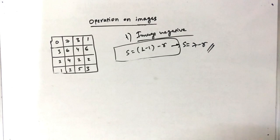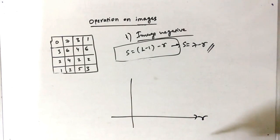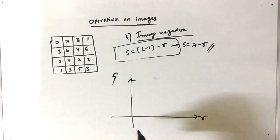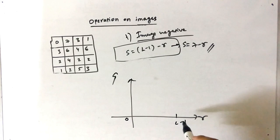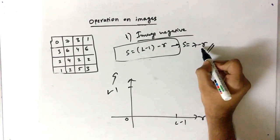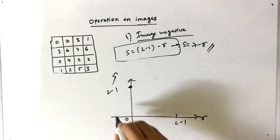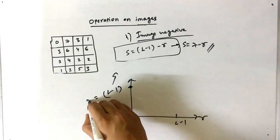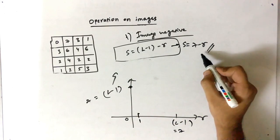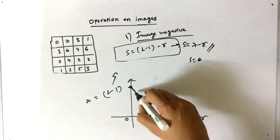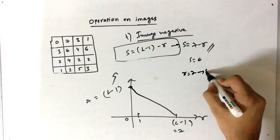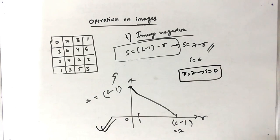If you look at the graph of this operation, the X axis is the given image R and the Y axis is the modified image S. The range is 0 to L minus 1 for both axes. When R is 0, S is 7, so it starts at the top. When R is 1, S is 6 — it is decreasing. When R is 7, S is 0. So this is the graph of the image negative.